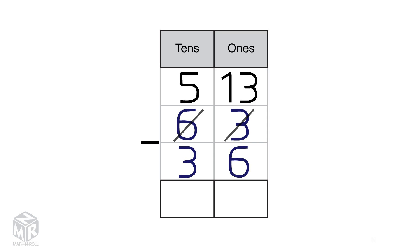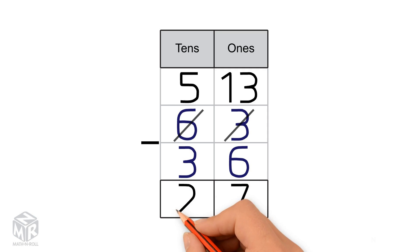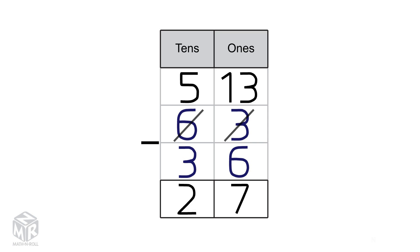Now we subtract the 1s: 13 minus 6 equals 7. Then we subtract the 10s: 5 minus 3 equals 2. So 63 minus 36 equals 27.